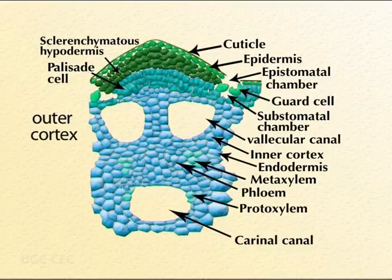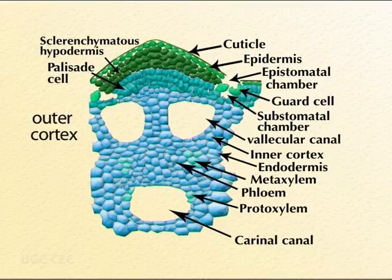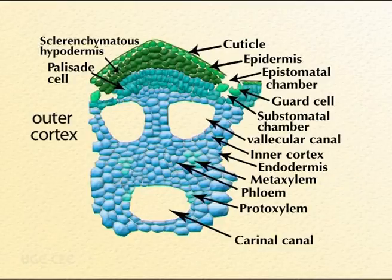The cortex is delimited from the stele by an endodermis, which varies in its position in different species of Equisetum. The endodermis is followed by a single layer of parenchymatous pericycle. Then the vascular cylinder, which is at the center, is siphonostelic in case of the Equisetum aerial shoot, where vascular bundles are arranged in a ring around the large central pith. The number of vascular bundles corresponds with the number of ridges. The vascular bundles of the aerial shoot of Equisetum are conjoint, collateral, and endarch.